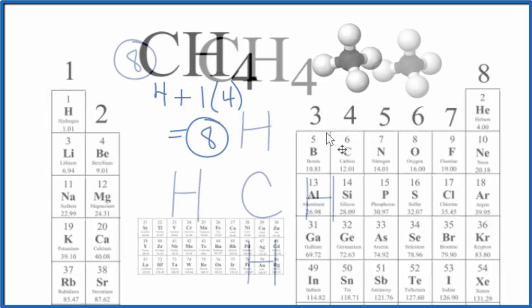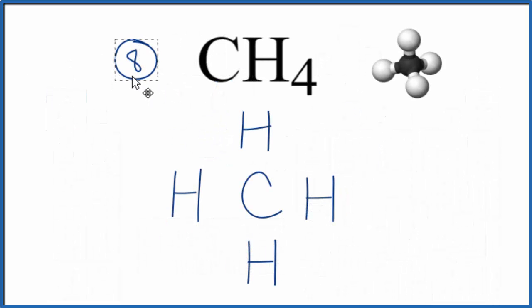So now we can draw the Lewis structure. We have a total of 8 valence electrons here. We'll put 2 between atoms - that's going to form our chemical bond. At this point we've used 2, 4, 6, 8. We've used all 8 valence electrons. We don't have any more, but carbon has an octet, it has 8 valence electrons, and hydrogen only needs 2 valence electrons. So this is a good Lewis structure for CH4.